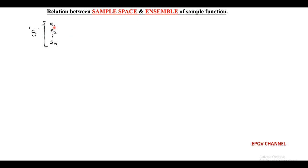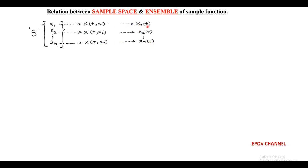Now, let us discuss the relationship between sample space and ensemble of sample functions. We consider a sample space capital S which contains n sample points s1, s2 up to sn, corresponding to the outcome of any random experiment. Each sample point is assigned as a function of time within observed period of 2T. So the sample point s1 is assigned to a waveform x1(t) corresponding to the first trial of the experiment within time range of –T to +T. Similarly, s2 to sn are assigned to waveforms x2(t) to xn(t), as shown in the figure.